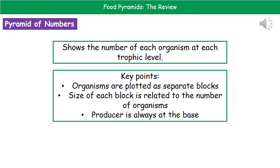They have asked you to draw one of these pyramids of numbers before, and they will give you a little printed bit of graph paper in your exam booklet — make sure you use it. The reason they've given you the graph paper is so that you will use an appropriate scale, so one little square equals ten organisms, something along those lines.